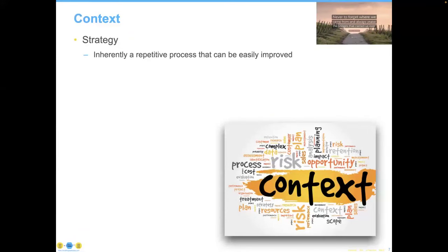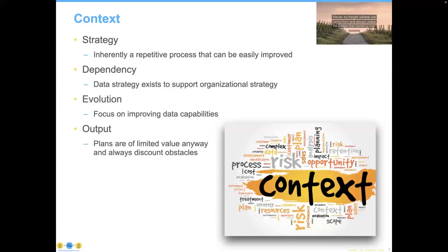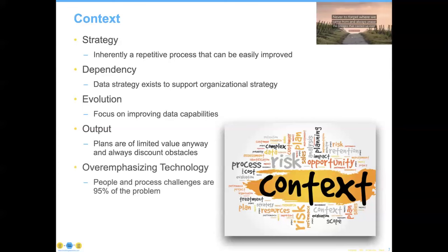I contend that strategy is inherently a repetitive process that can be easily improved, and that the only reason a data strategy exists is to support the organizational strategy. There can be complementary aspects on each part, but really the dependency is clearly in that direction. There's an evolution focusing on improving data capabilities within the context of the larger organizational strategy.